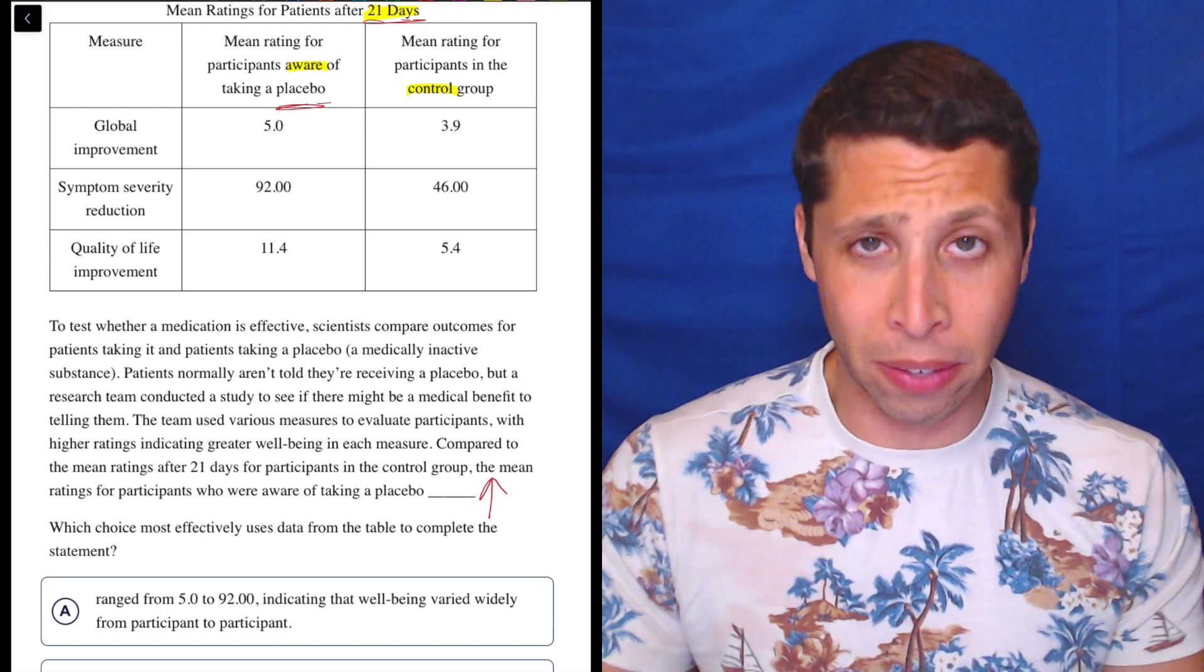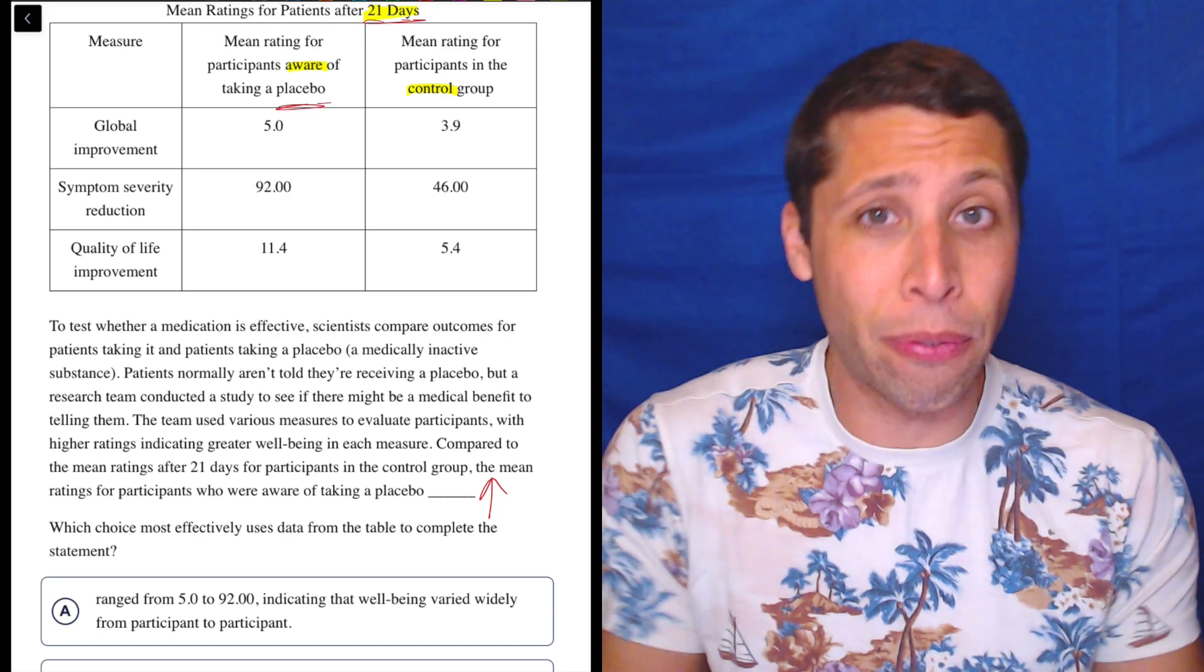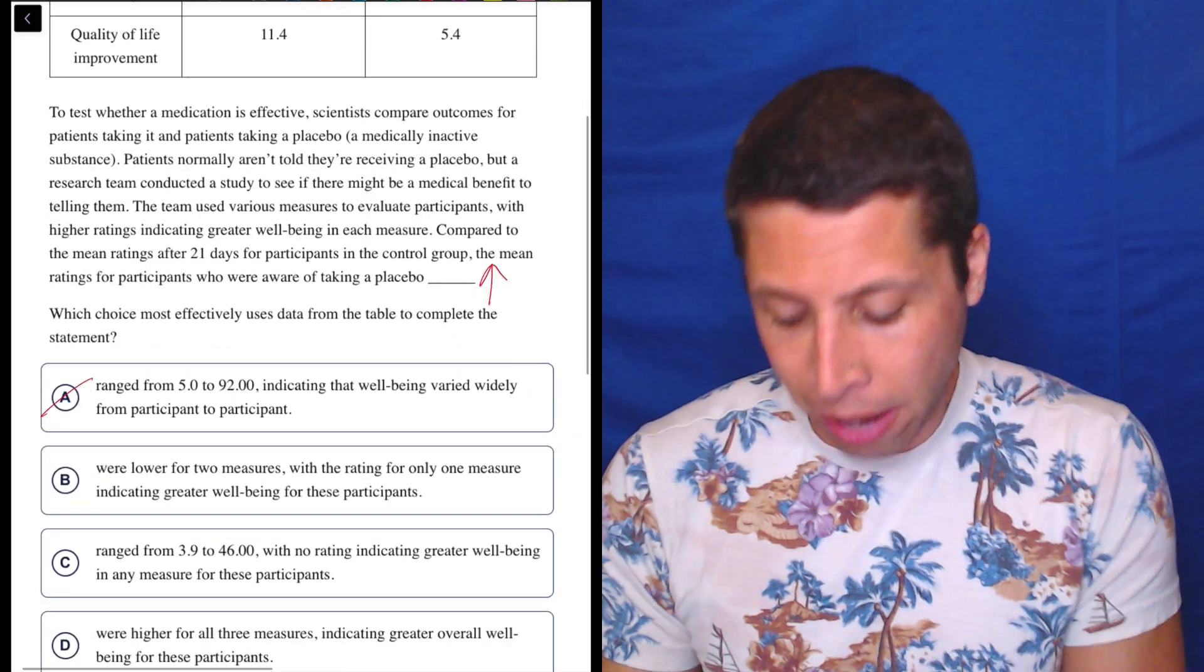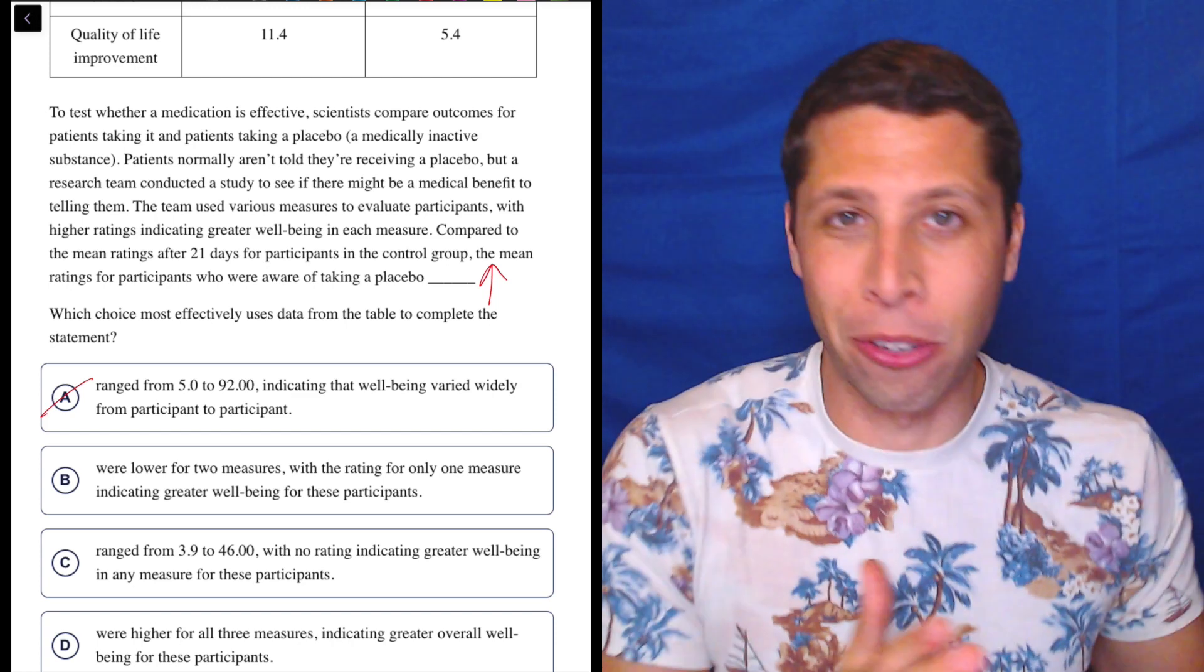Well, the 5 is the global improvement, whatever that means. Symptom severity reduction, I don't know what that means either, but that's a different category. So this is comparing within the different categories. We want to talk about the left column versus the right column.